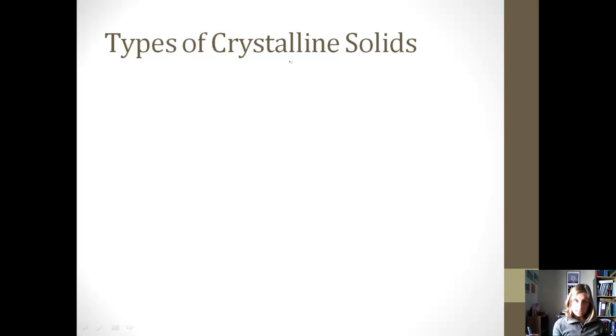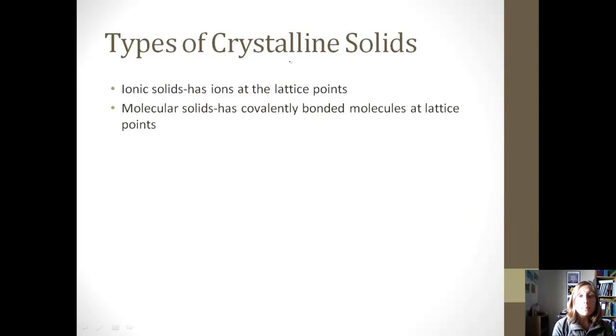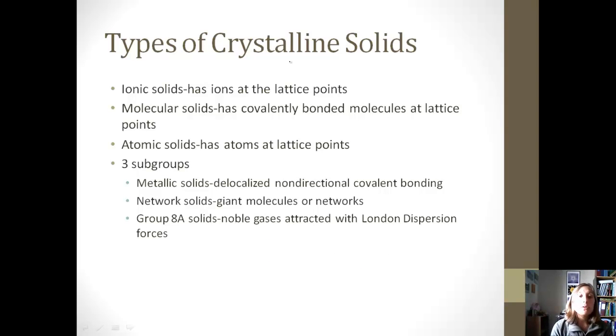So we talked about the two main types of solids, so now let's talk about some types of crystalline solids since those are more common. We can have ionic solids, which have ions at the lattice points. We can also have molecular solids, which have covalently bonded molecules at the lattice points. Or we can have atomic solids, which have atoms at the lattice points. We have three groups of atomic solids. There's a metallic solid, which would include delocalized non-directional covalent bonding between our metals. We can have a network solid, which is a giant molecule, lots of bonds going on. And then we can also have group 8A solids. Group 8A are the noble gases, and so these get attracted with London dispersion forces.